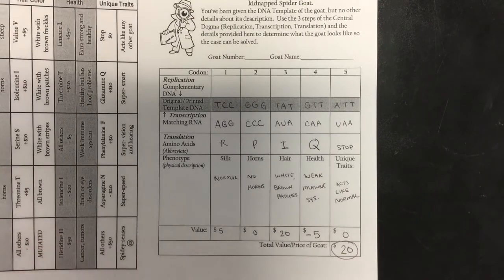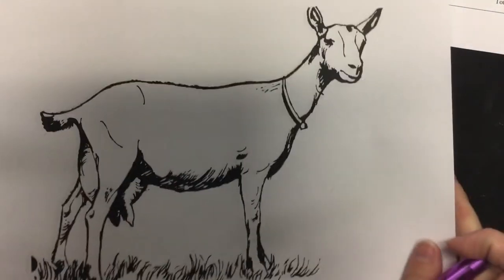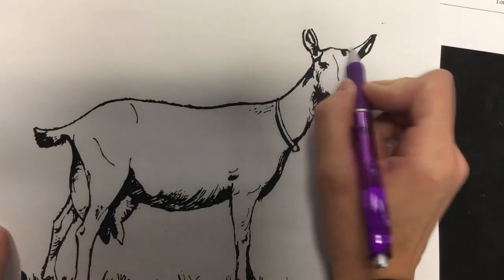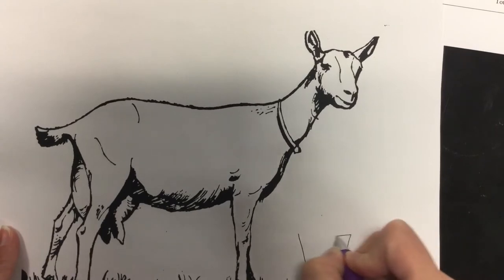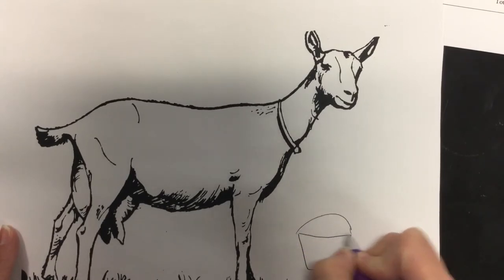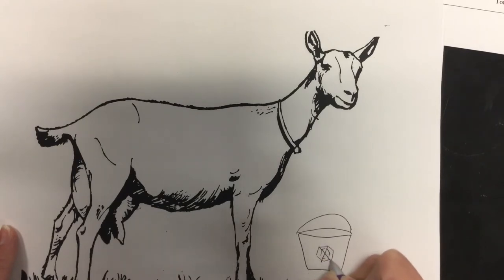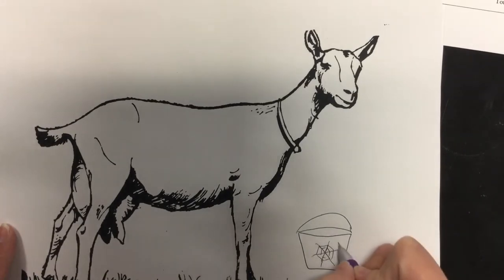So then what you would do is take those traits — normal, no horns, brown and white patches, weak immune system, acts like normal — and draw that out on your goat sheet. So if mine has no horns, I don't have to draw anything there. If he has completely normal spider silk, maybe I would draw a bucket like so with a spider web on it — completely normal spider silk milk. Nothing weird about that.